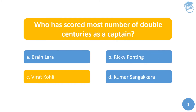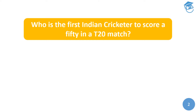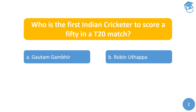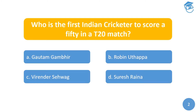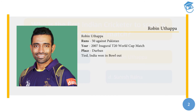Moving on to the next question: who is the first Indian cricketer to score a 50 in a T20 match? Your options are: A) Gautam Gambhir, B) Robin Uthappa, C) Virendra Sehwag, or D) Suresh Raina. The answer is B) Robin Uthappa. He scored a 50 against Pakistan in the 2007 inaugural T20 World Cup match at Durban. If you recall, this match ended up in a tie which later on India won by a bowl-out.